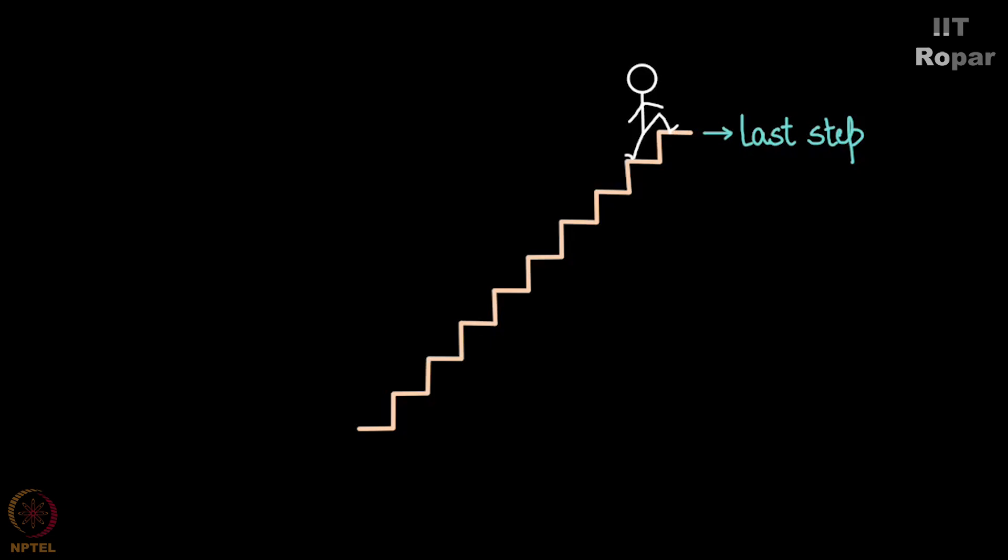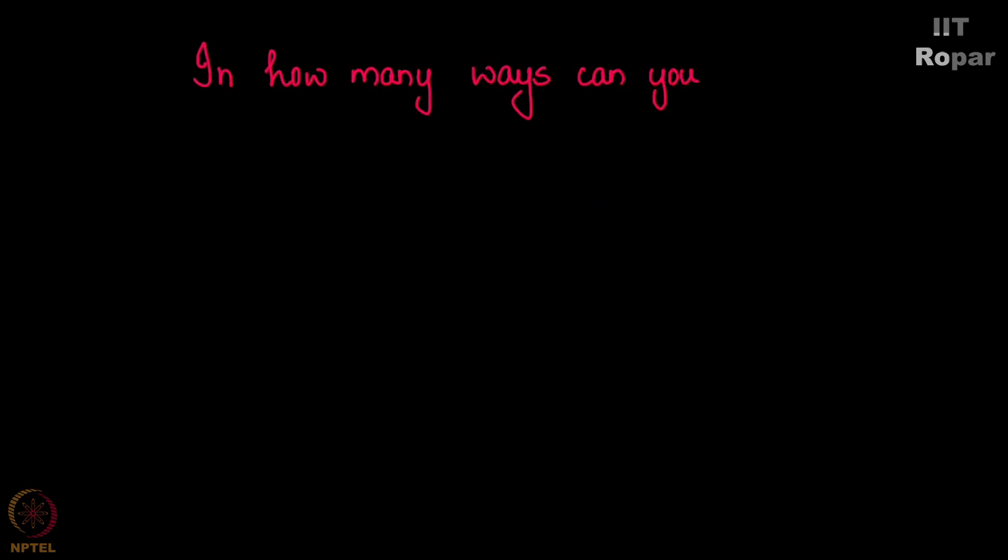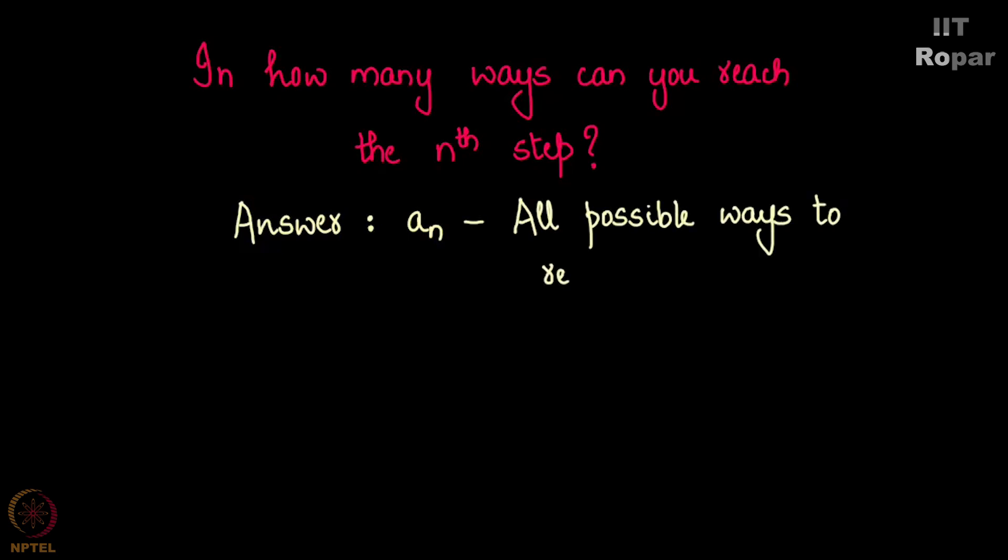Now getting back to the problem, the question was: in how many ways can you reach the nth step? Let a_n denote the total ways in which you can start from the first step and reach the nth step by taking one or two steps.